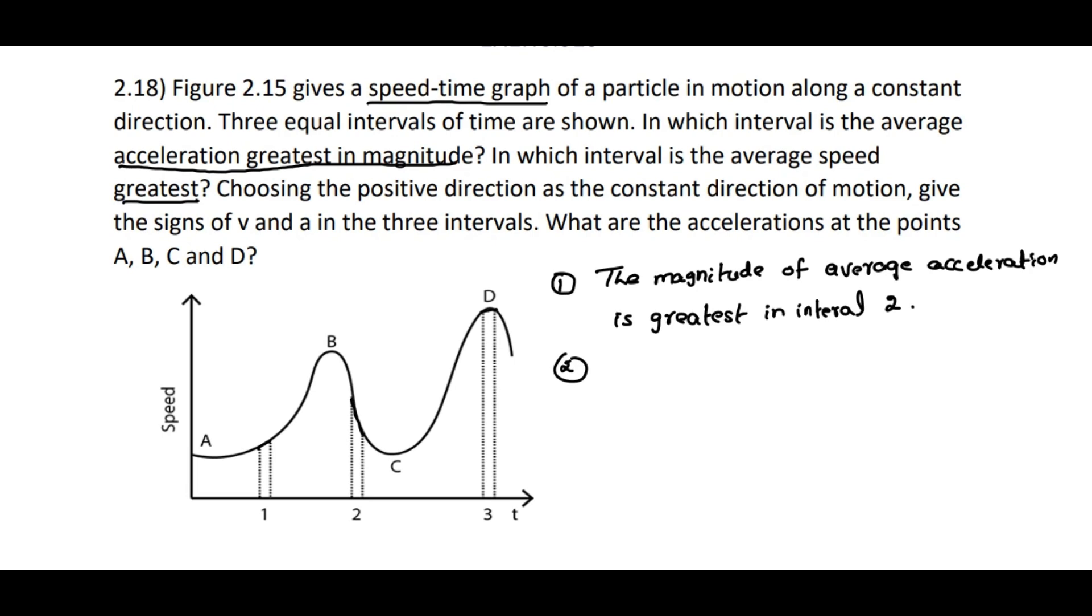While coming to the second sub-question, in which interval is the average speed greatest? If you observe this speed-time graph, the speed is maximum at D, that is in interval three. So we can write, average speed is greatest in interval three.